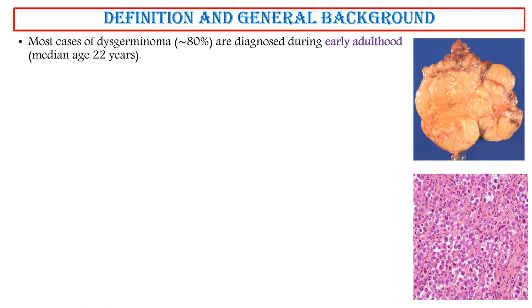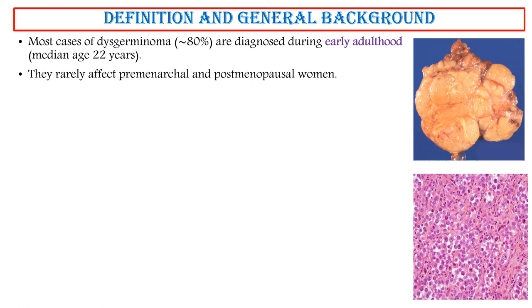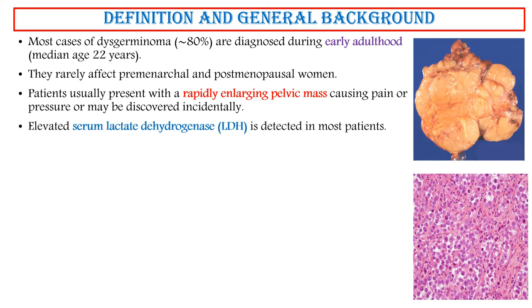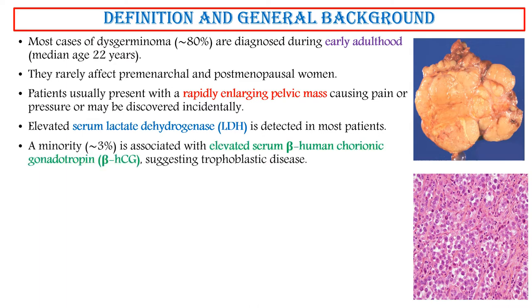Most cases of dysgerminoma, approximately 80%, are diagnosed during early adulthood with a median age of 22 years. They rarely affect pre-menarchal and post-menopausal women. Patients usually present with a rapidly enlarging pelvic mass causing pain or pressure, or may be discovered incidentally. Elevated serum lactate dehydrogenase (LDH) is detected in most patients. A minority, approximately 3%, is associated with elevated serum beta-human chorionic gonadotropin (beta-HCG), suggesting trophoblastic disease.